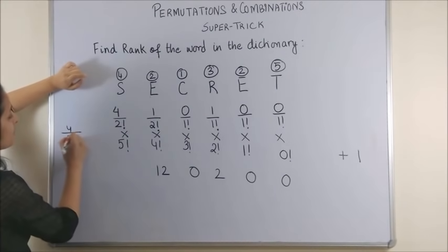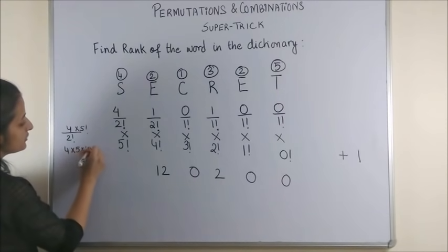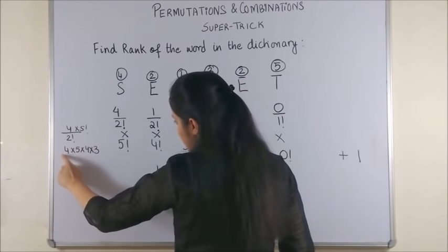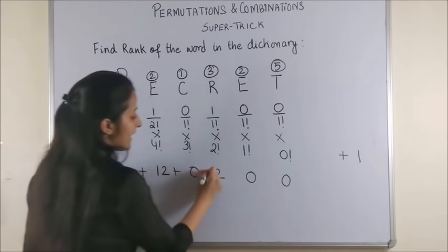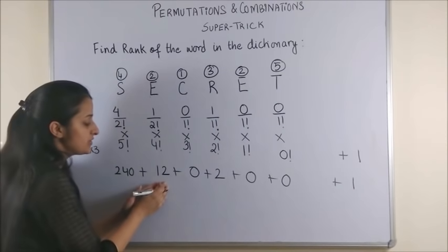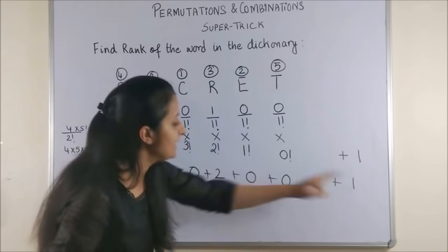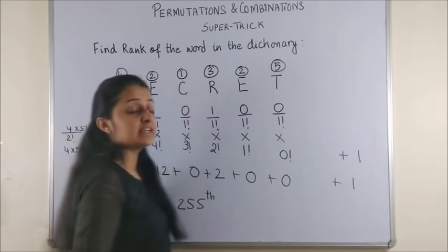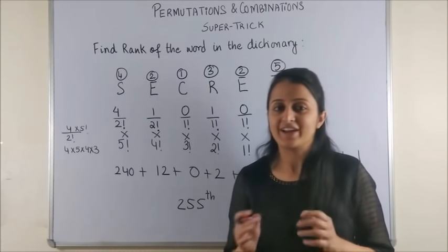Now, look at this. 4 upon 2 factorial into 5 factorial. So, you will be left with 4 into 5 into 4 into 3. That makes it 4 into 12, 12 into 5. You get 240. And now, we will be adding all of them. And to this, we add 1. So, this is 240 plus 12. That's 252. Plus 2. That's 254. And in the end, 1. So, 255. That means, the word SECRET is on the 255th rank.